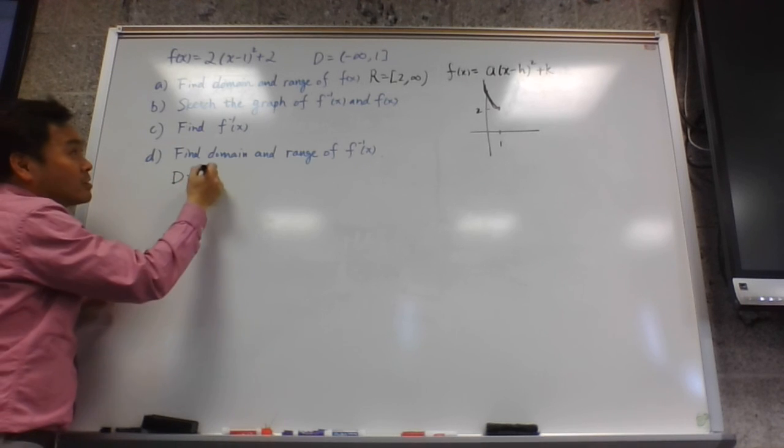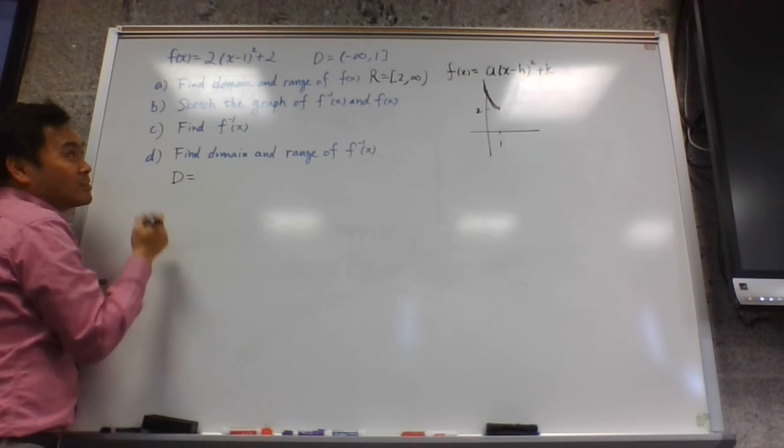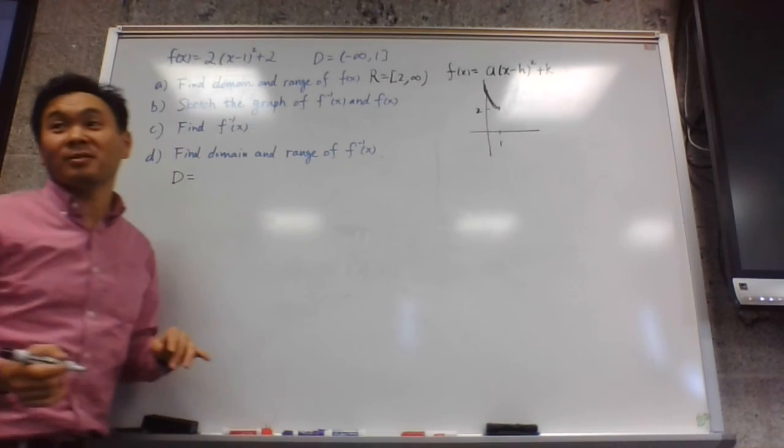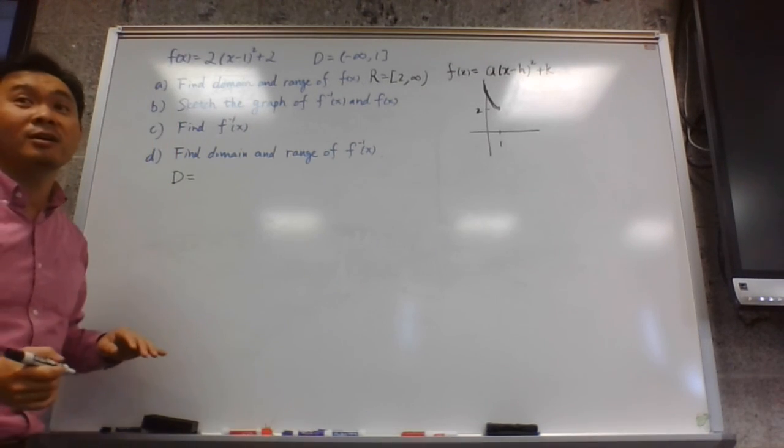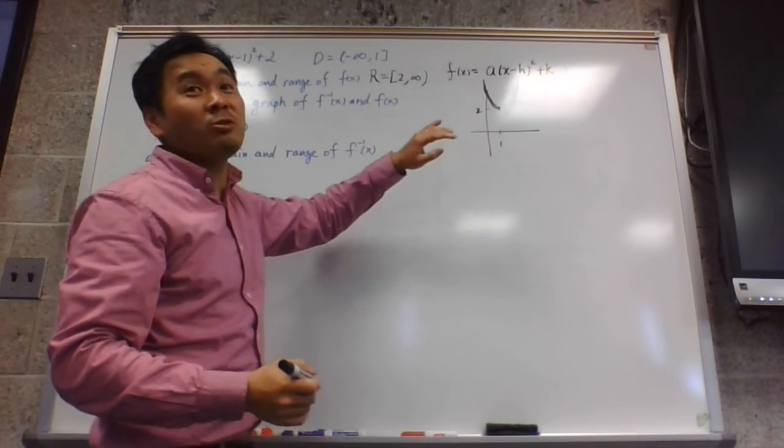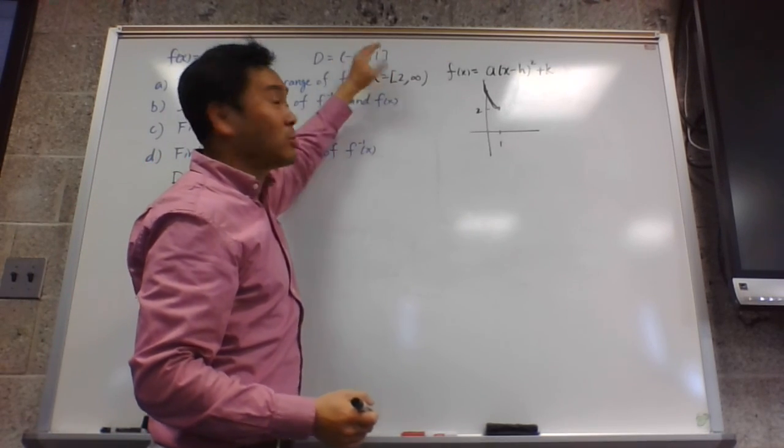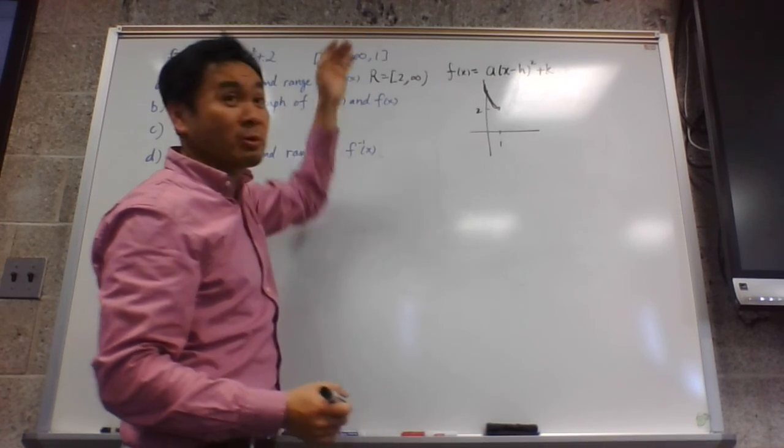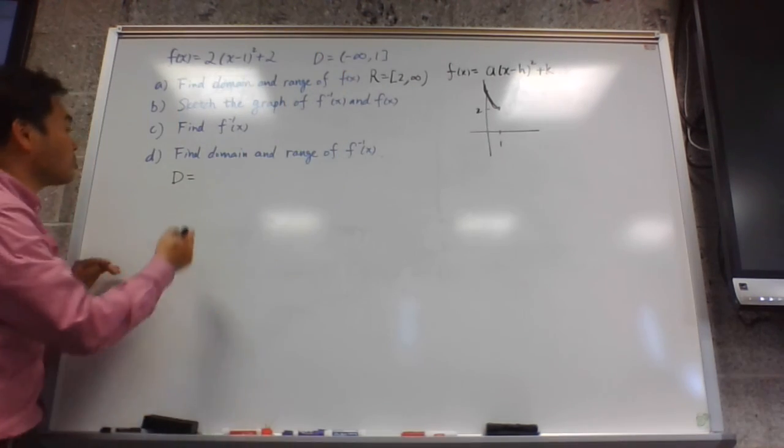2 to... What is it? 1 to negative... No, no, no. Oh wait. Which way do you flip? You flip like this? No, you flip like this. Domain and range gets flipped. The domain becomes range, range becomes domain. So what's the domain?